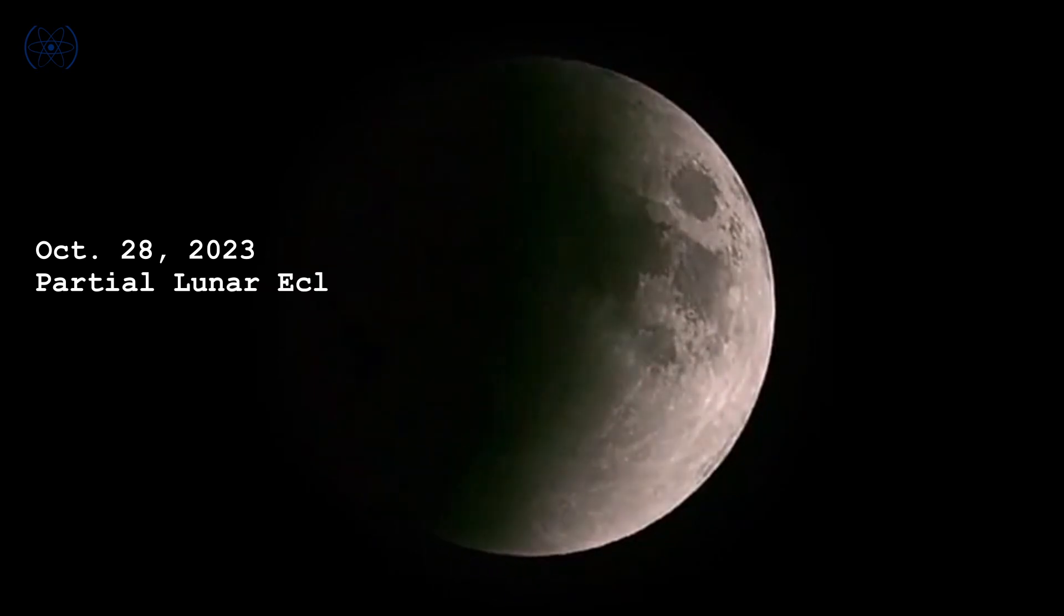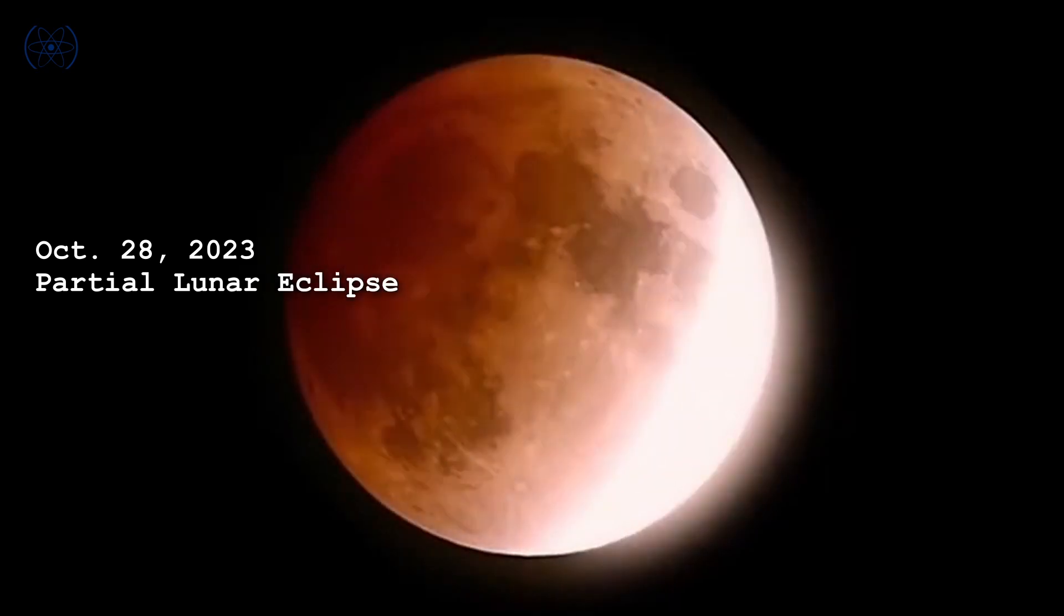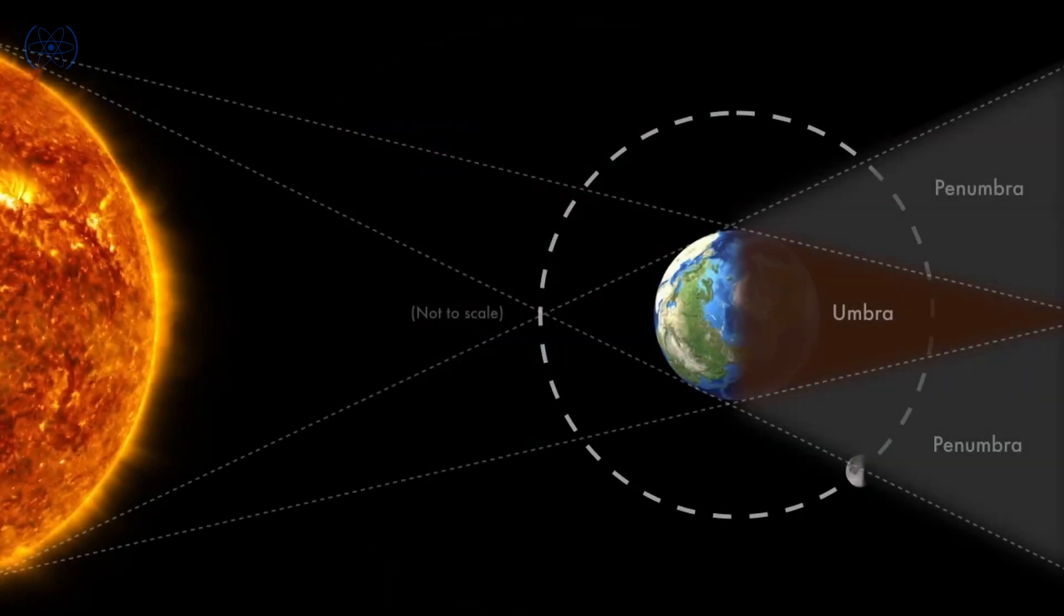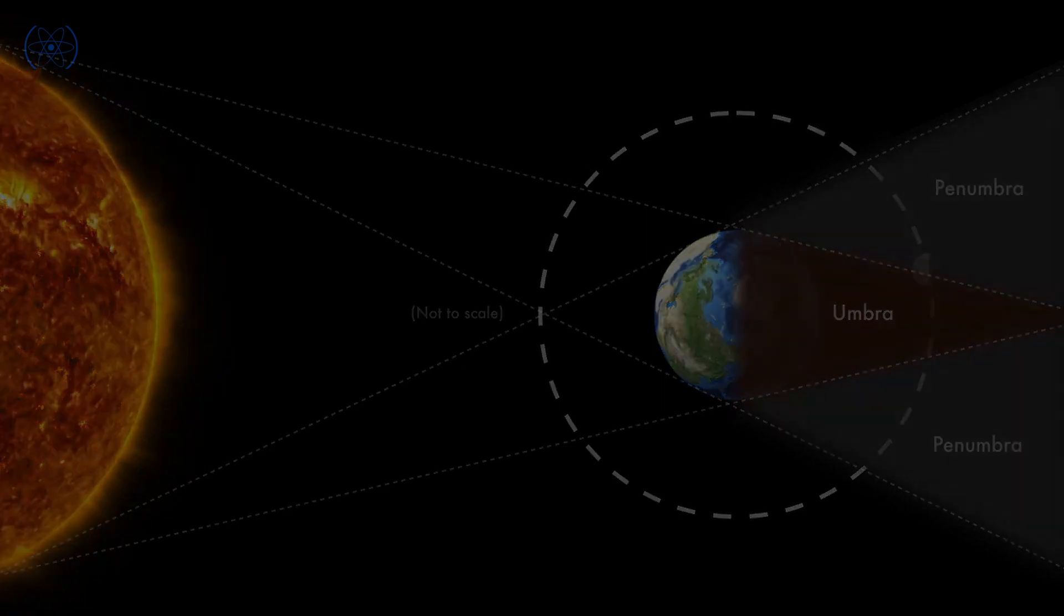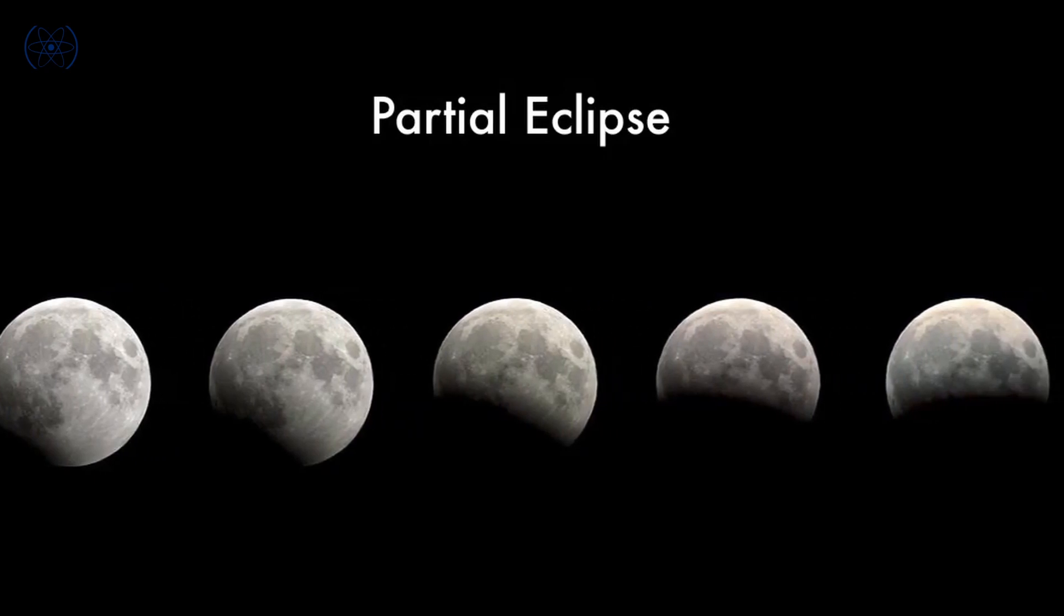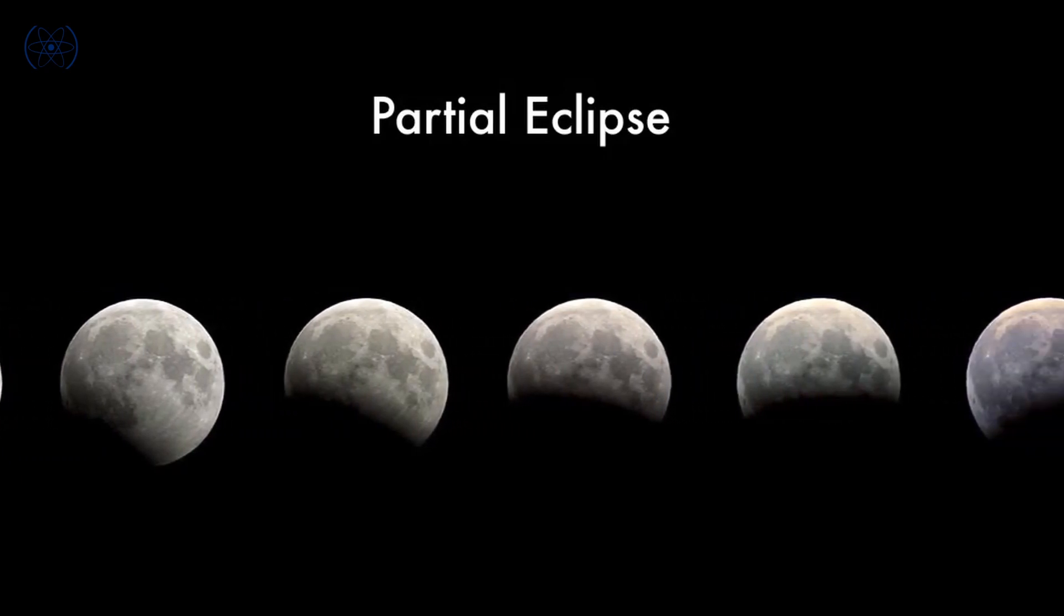On October 28th, we will get a partial lunar eclipse. A partial eclipse occurs when the moon passes through Earth's penumbra, or partial shadow, and only a portion passes through the umbra, or the darkest shadow. During this eclipse, a small part of the moon will darken as it moves through Earth's shadow.